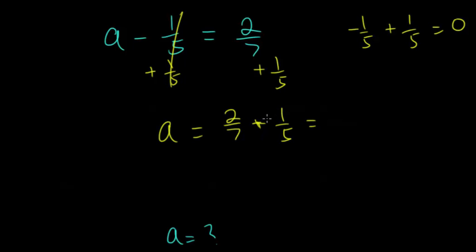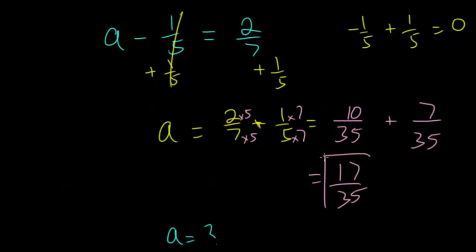So we get that a is 2 sevenths plus 1 fifth. And we're adding fractions, so we need a common denominator. And when we multiply 5 and 7, we get 35 for each of these denominators. And we multiplied 7 by 5, so we'll do the same to the 2. And we multiplied 5 by 7, so we'll do the same to the 1. So 2 times 5 gives us 10 for this numerator. And 10 thirty fifths does simplify to 2 sevenths. And 1 times 7 is 7. And again, 7 thirty fifths does simplify to 1 fifth. So we have 10 of these thirty fifths, and we're adding 7 more thirty fifths. So in total, you have 17 thirty fifths.